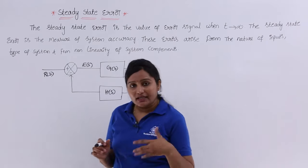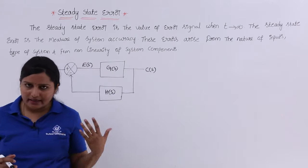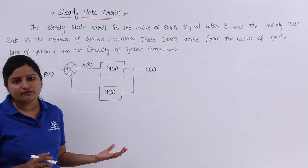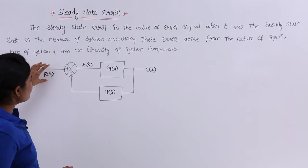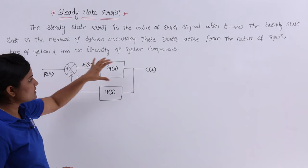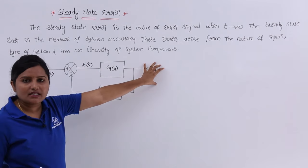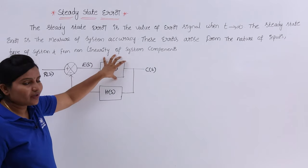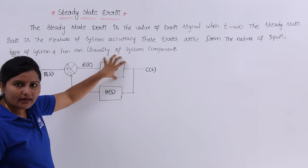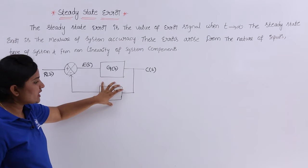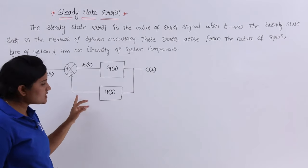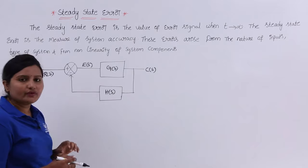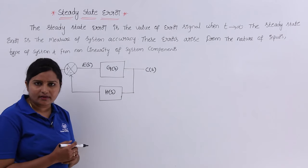We can analyze that error signal and get an equation for it. Here R(s) is the input, C(s) is the output for a control system. We are having a feedback gain H(s) — this is the negative feedback control system we are considering here.